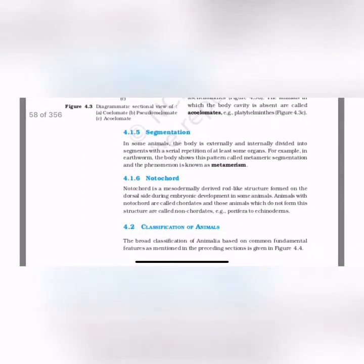Segmentation: In some animals the body is externally and internally divided into segments with a serial repetition of at least some organs. For example, in earthworm the body shows this pattern, which we call metameric segmentation. Metameric means different — meta means change — so we have different types of ring-like structures. This phenomenon is also called metamerization.